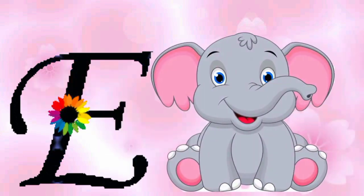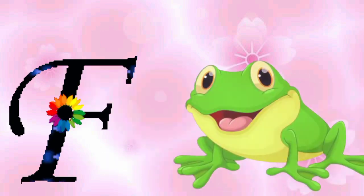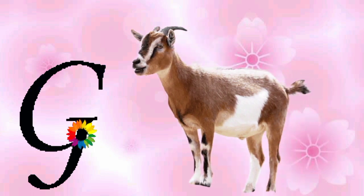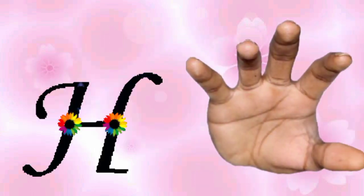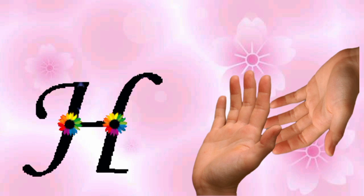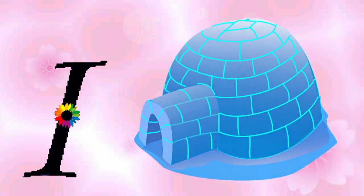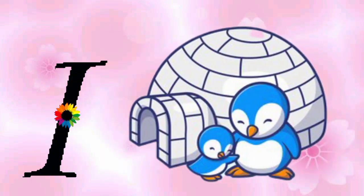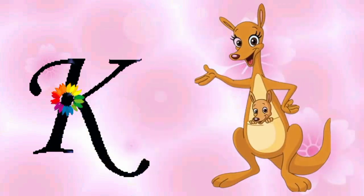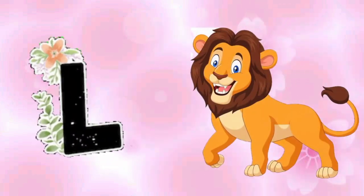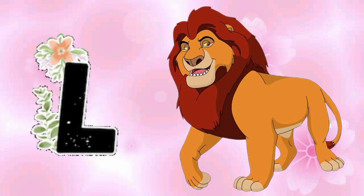F is for frog, f-f-frog. G is for goat, g-g-goat. H is for hand, a-a-hand. I is for igloo, e-i-igloo. J is for jump, j-j-jump. K is for kangaroo, c-c-kangaroo. L is for lion, l-l-lion.